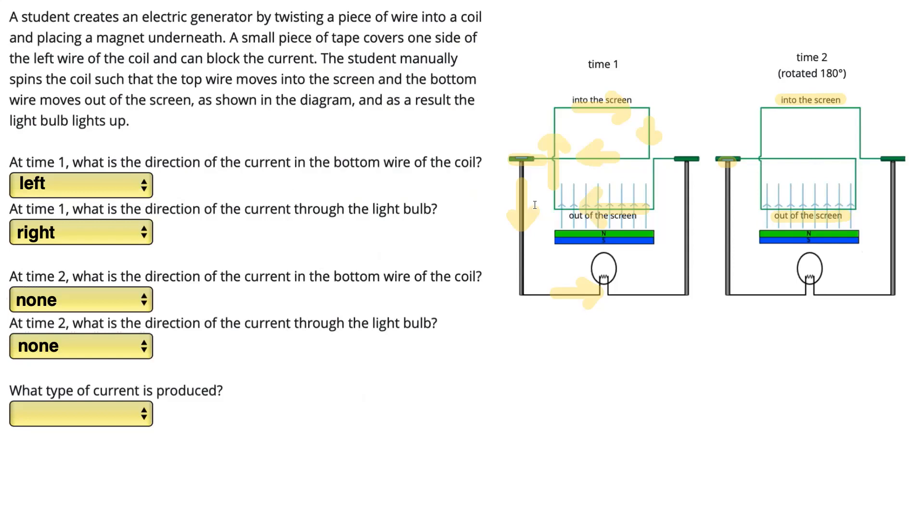So as a result, we have the first part, the first 180 degrees of the turn, in which the current is traveling one way. In the second half of the turn, there's actually no current flowing. Then it gets back to time 1 again, and it's rotated through that first 180 degrees. And again, the current is flowing in one way. So the type of current produced here is going to be direct, because it's always flowing in the same direction.